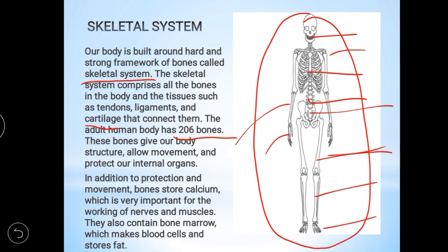The bones store calcium, which is very important. Bone marrow is the fluid structure inside the bone. From the bone marrow, blood is produced. The bone marrow produces blood and also stores fat.